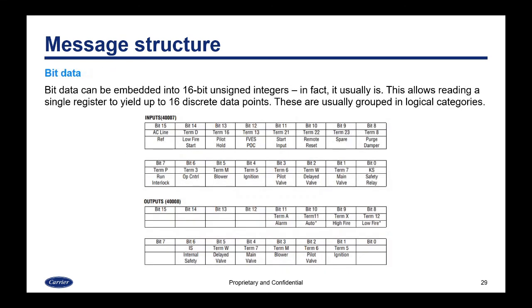Bit data can also be embedded into 16-bit unsigned integers, and in fact this is usually how it's presented. Bit data allows reading a single register of on or off values, and you can yield up to 16 discrete data points by putting them into one 16-bit unsigned integer. They are usually grouped into logical categories — so in one example, one register will group inputs and another will group outputs, and depending on which bit is on, it will tell you if an input or output is on.